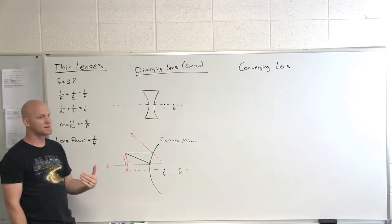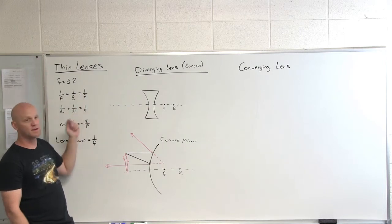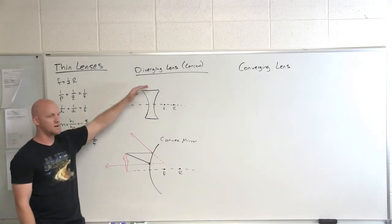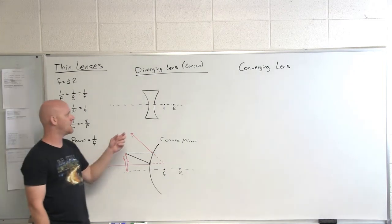So if they tell you the radius of curvature is 10 centimeters, then your focal distance will be half that, 5 centimeters. But in the equation, it's actually going to get plugged in as negative 5 centimeters for the diverging lens or a diverging mirror here. Pretty cool with that. Alright.